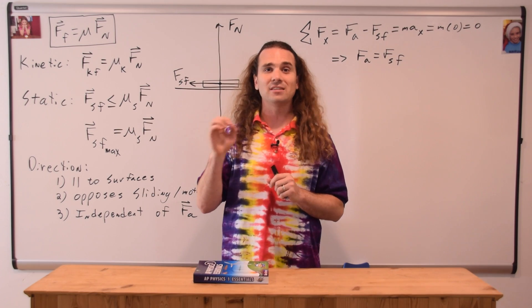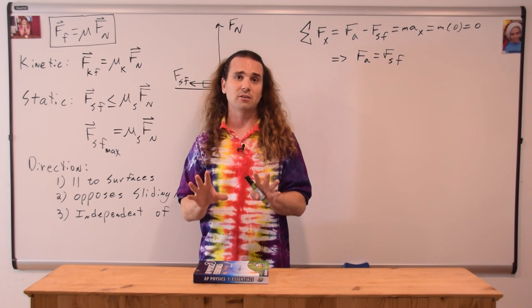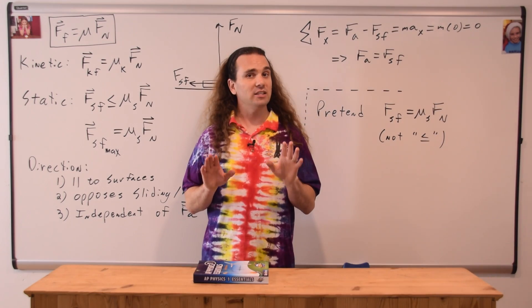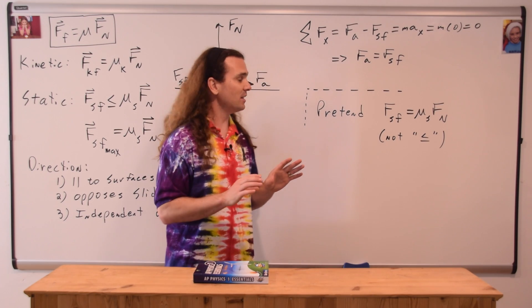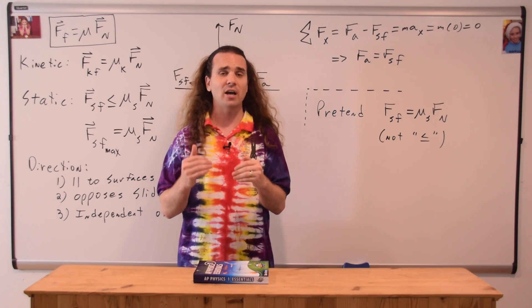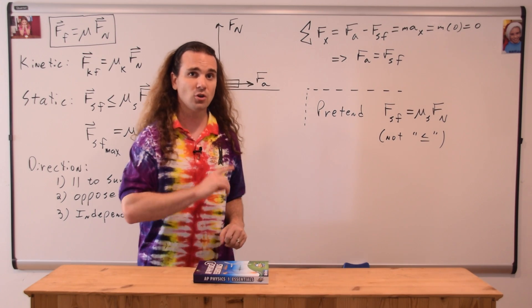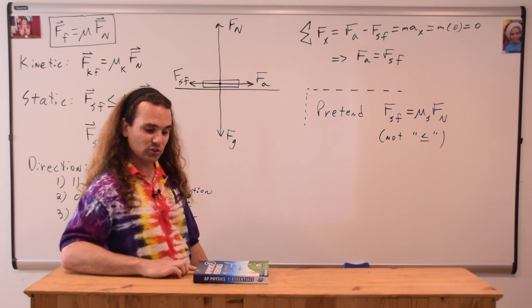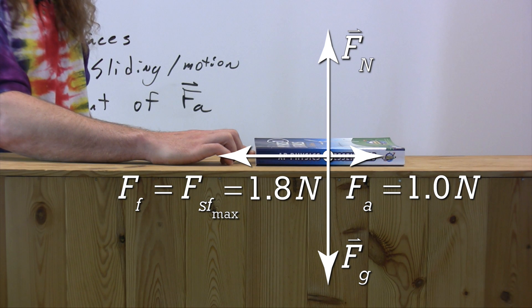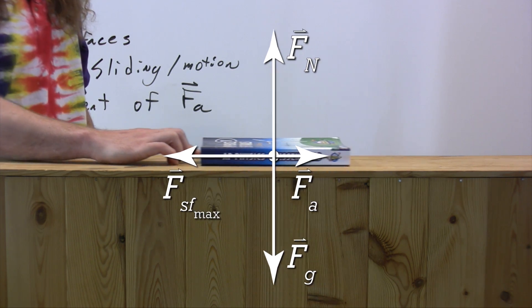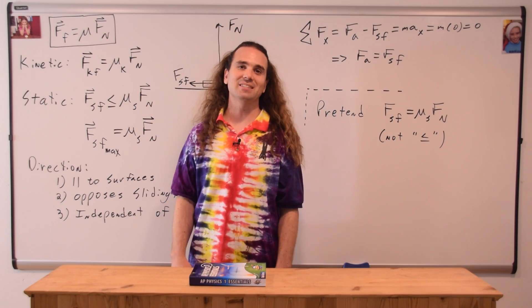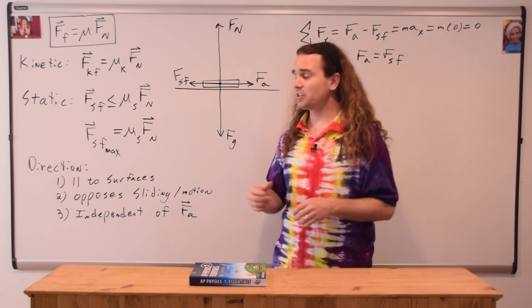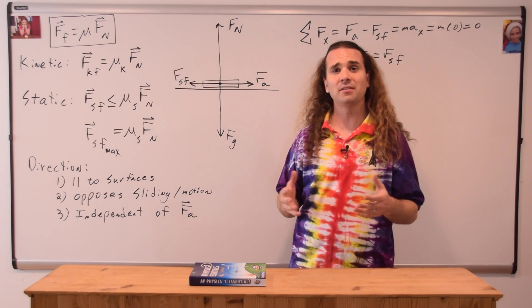Let's pretend that the force of static friction always equaled its maximum value of 1.8 newtons. If a force of only 1 newton were applied, the static friction would be greater than the applied force, and the book would slide to the left — opposite the direction pushed — which doesn't make any sense. So rather than being a constant number, the force of static friction adjusts in an attempt to prevent the object from moving.